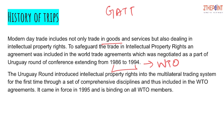Modern day trade includes not only trade in goods but also in services and intellectual property rights. To safeguard trade in IPR, an agreement was included in the world trade agreements, negotiated as part of the Uruguay Round of conference from 1986 to 1994. The Uruguay Round introduced intellectual property rights into the multilateral trading system for the first time through a set of comprehensive disciplines, and thus included them in the WTO agreements. It came into force in 1995 and is mandatory and binding on all WTO members.